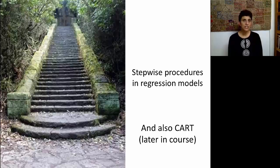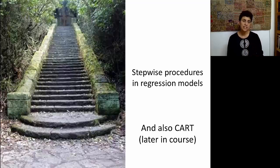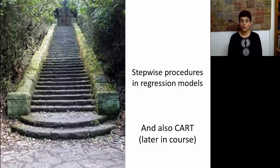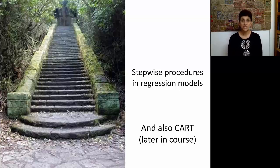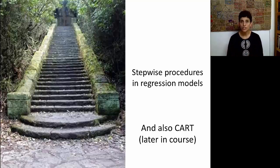Finally, when we're in the supervised learning scenario, where we have an output and a bunch of inputs, we've already seen one method for dimension reduction, which is stepwise procedures in linear regression. This is also very useful in logistic regression, as we'll see when we get there. Other methods, such as CART — classification and regression trees — are also very useful supervised learning methods that have variable selection, or dimension reduction, techniques built in. We'll see these as we get to CART later on.